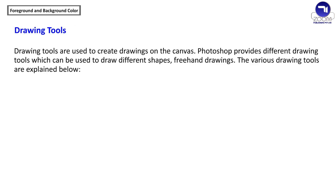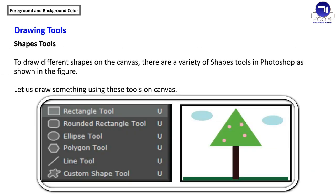Drawing tools are used to create drawings on the canvas. Photoshop provides different drawing tools which can be used to draw different shapes and freehand drawings. There are a variety of shape tools in Photoshop, including Rectangle tool, Rounded Rectangle tool, Ellipse tool, Polygon tool, Line tool, and Custom Shape tool.